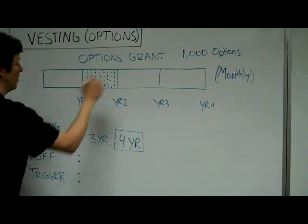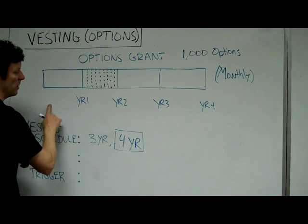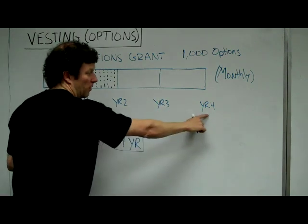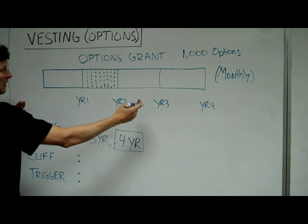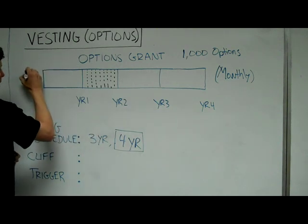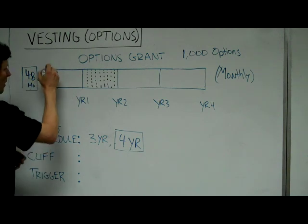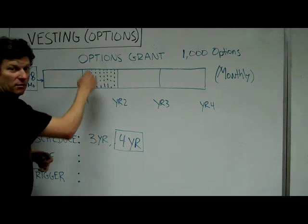In this case, over the course of four years, we've set the vesting schedule to four years. You can see year number one, year number two, year number three, year number four. Because the vesting schedule is four years, you're going to get—there's 48 months in four years. So you're going to get 1/48th of your options every month.